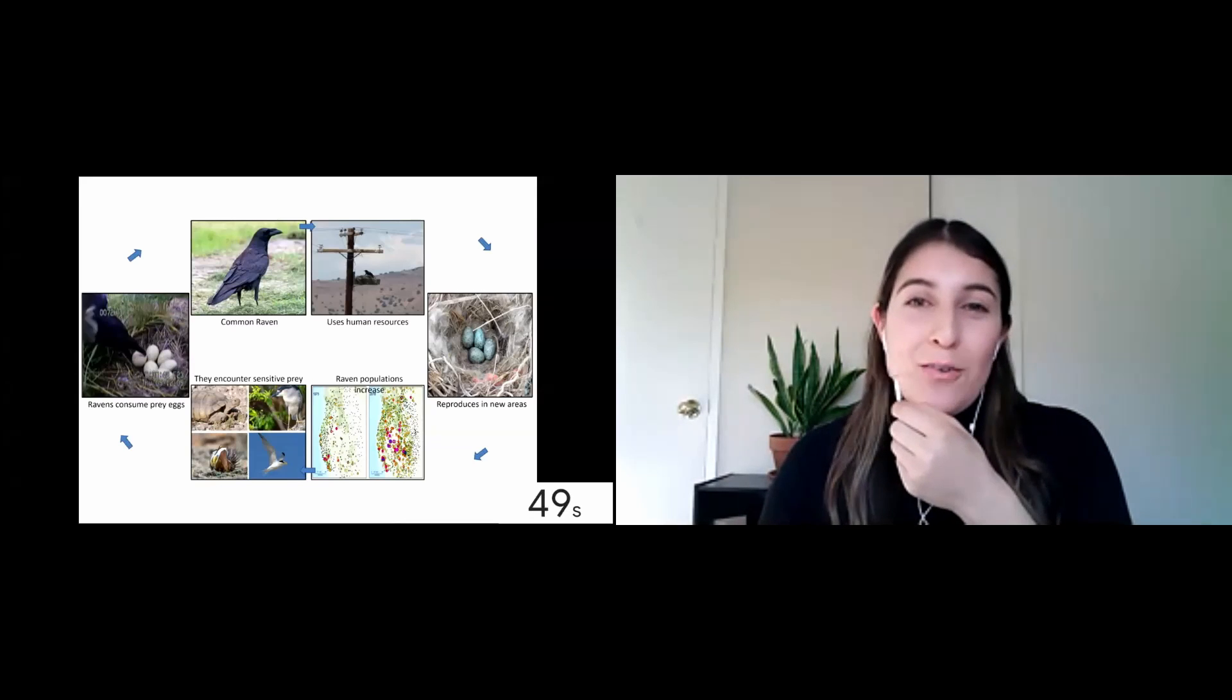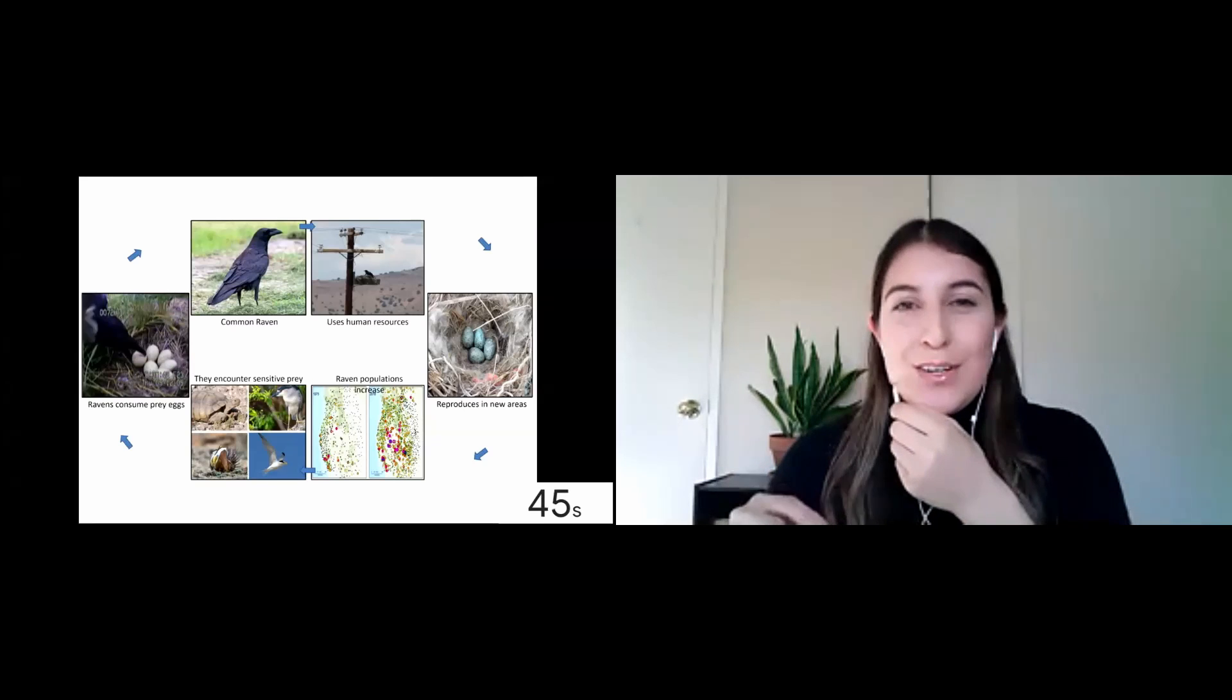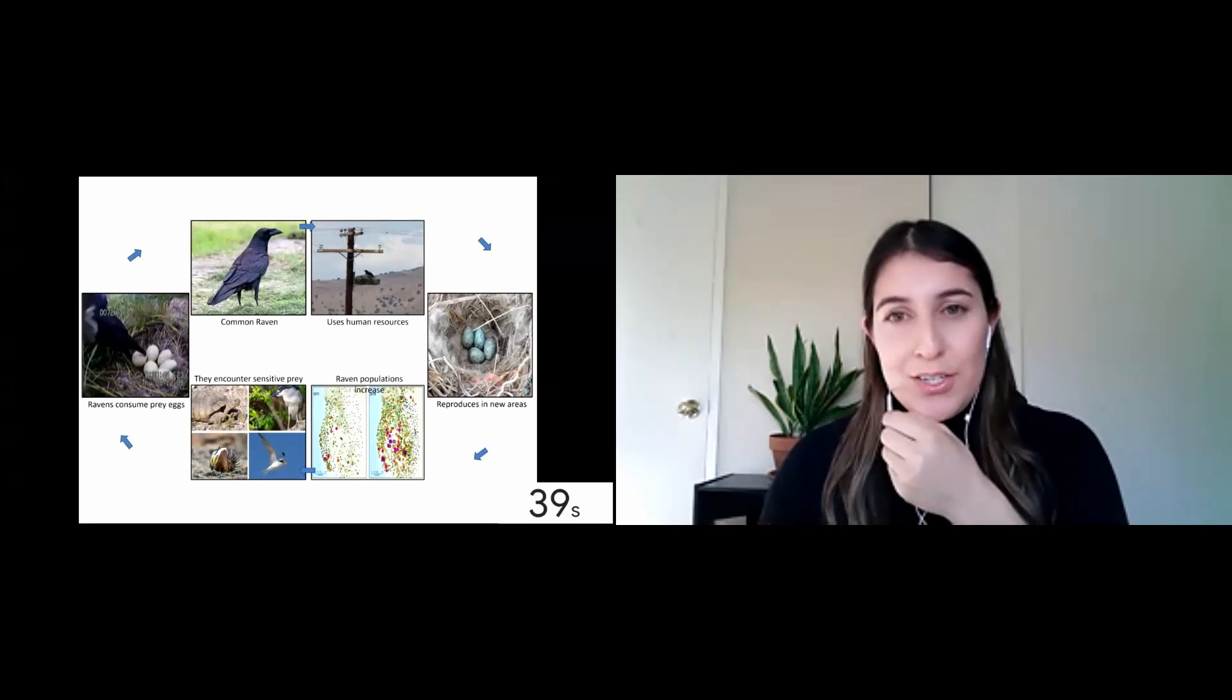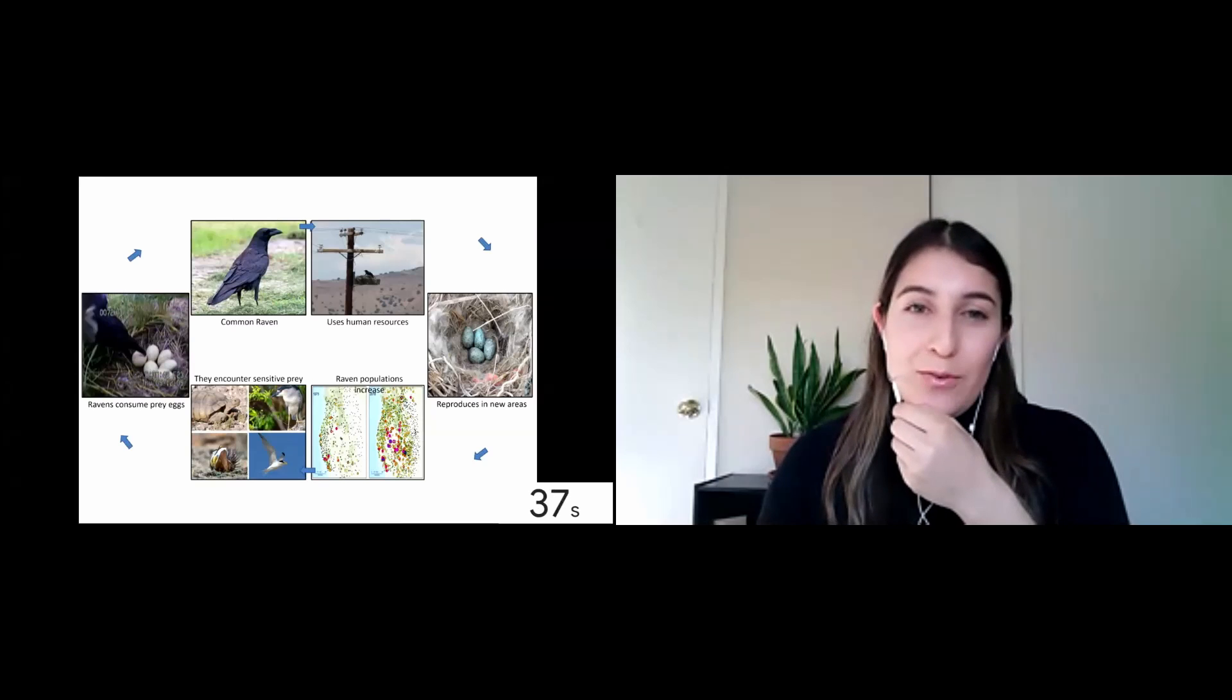One of the many species that ravens are affecting right now are greater sage grouse, that big bird underneath the tortoise picture. Ravens consume sage grouse eggs and cause their nests to fail, which is really hurting sage grouse populations. So we're treating all the raven nests that we can find in our study areas with egg oiling, and measuring changes in how sage grouse nests survive.